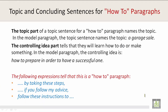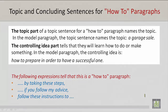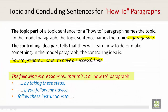Topic and Concluding Sentences for How-To Paragraphs. The topic part of a topic sentence for a how-to paragraph names the topic. In the model paragraph, the topic sentence names the topic — a garage sale. The controlling idea part tells that they will learn how to do or make something. In the model paragraph, the controlling idea is how to prepare in order to have a successful one. The following expressions tell that this is a how-to paragraph.